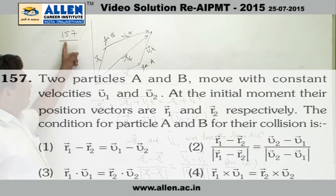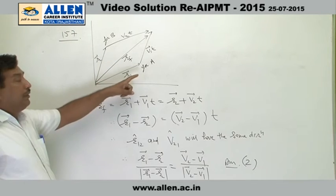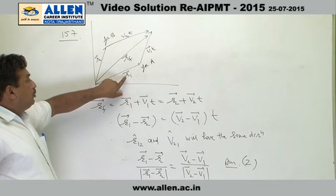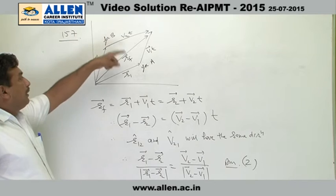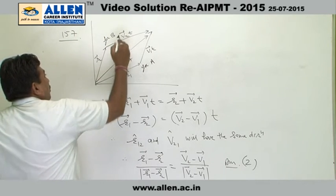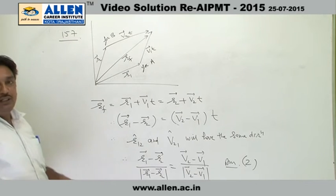In the given question 157, we are having two particles, particle A and particle B. The initial position vectors are given R1 and R2, and both particles are moving with velocities V1 and V2, and the condition is given the particles should collide.